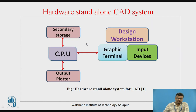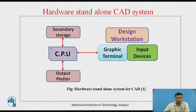With the help of a diagram, we can correlate the different components present in the hardware standalone system. The heart of the CAD system is where we store particular 3D models — for example, in secondary storage — which is connected to the CPU. The CPU is connected to the plotter or printer for output. The CPU is also connected to the graphic terminal and different input devices, and together these two things are called the design workstation.